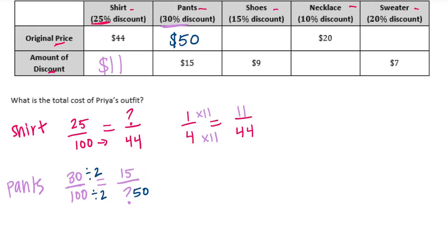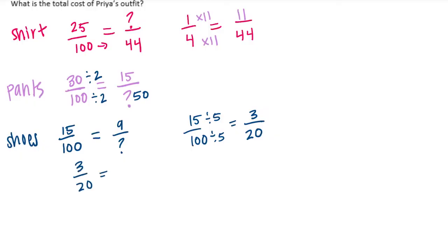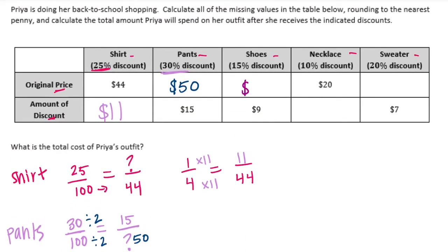Shoes: 15% discount, so 15 out of 100. The discount amount was $9, so we know the part but not the original price. I can't easily get from 15 to 9, so I'll reduce 15 one-hundredths by dividing both by 5: 15 divided by 5 is 3, and 100 divided by 5 is 20, giving 3 twentieths. Now 3 times 3 is 9, and 20 times 3 is 60. The original price was $60.